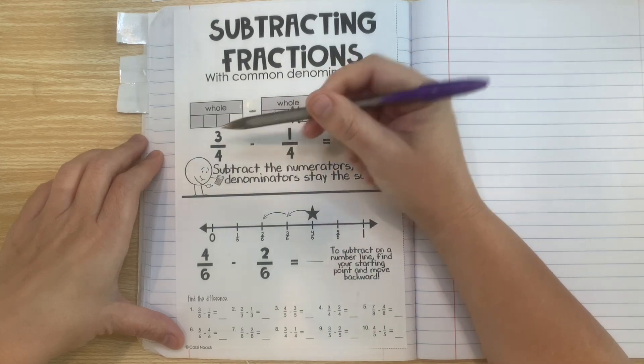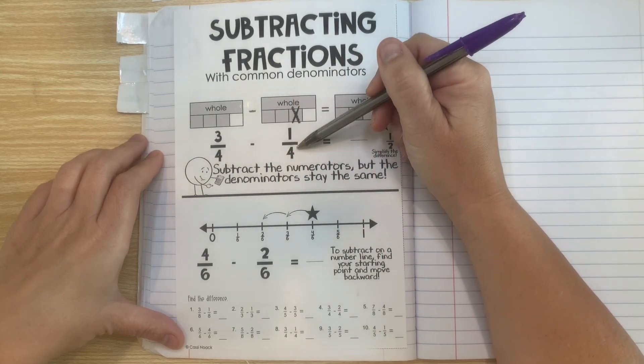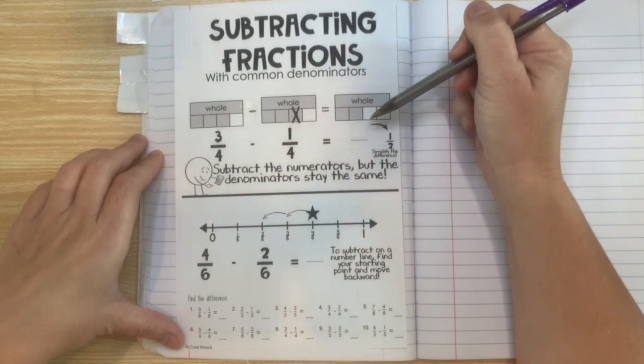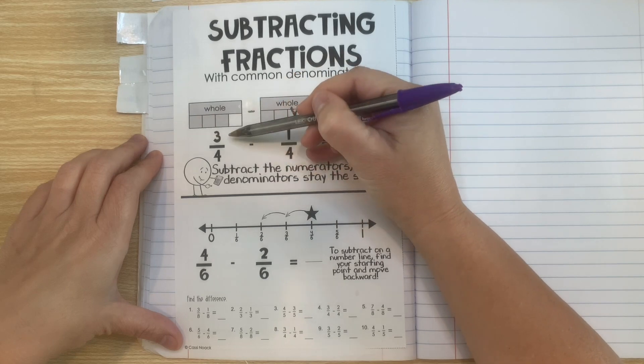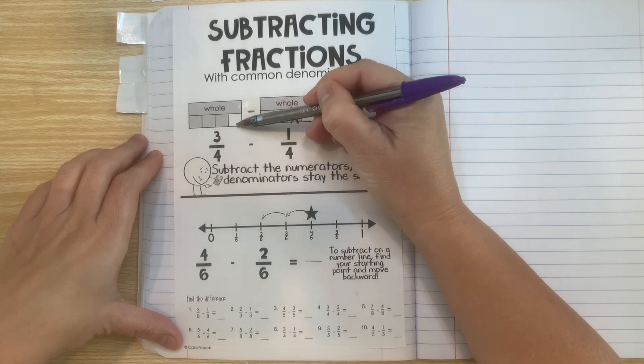Here we have a math sentence 3 fourths minus 1 fourth equals something and we also have a model that represents that. So here's our model that represents 3 fourths. Three out of the four parts are shaded.